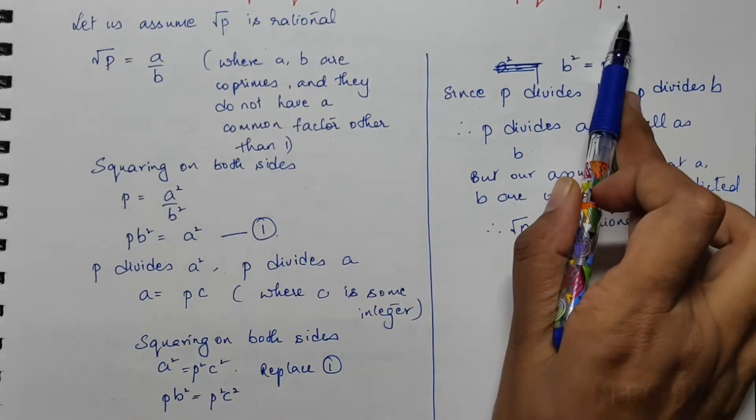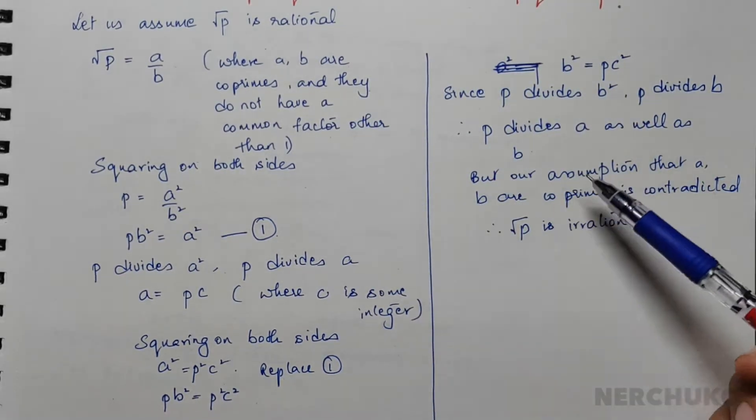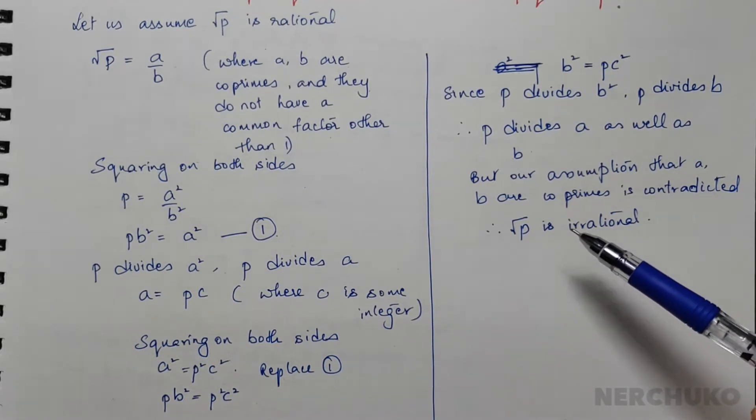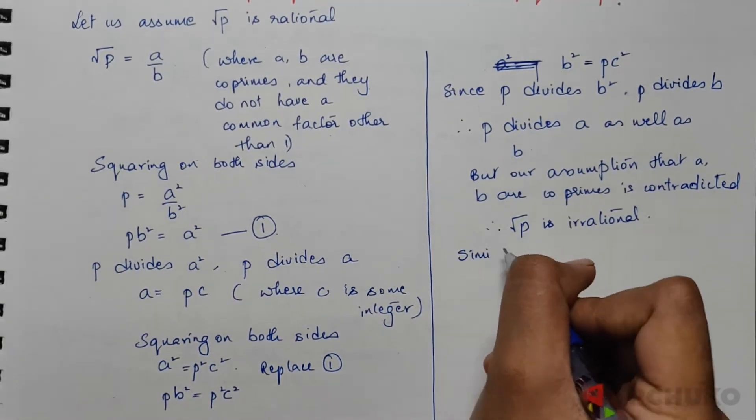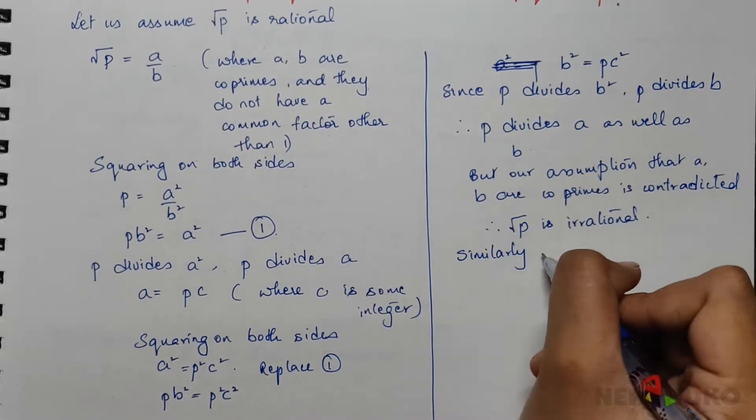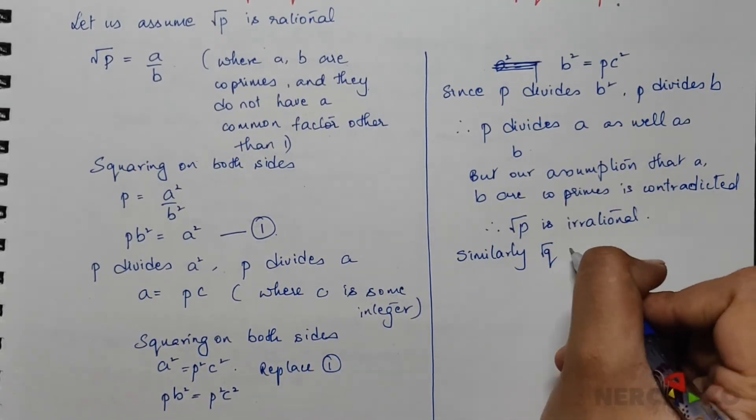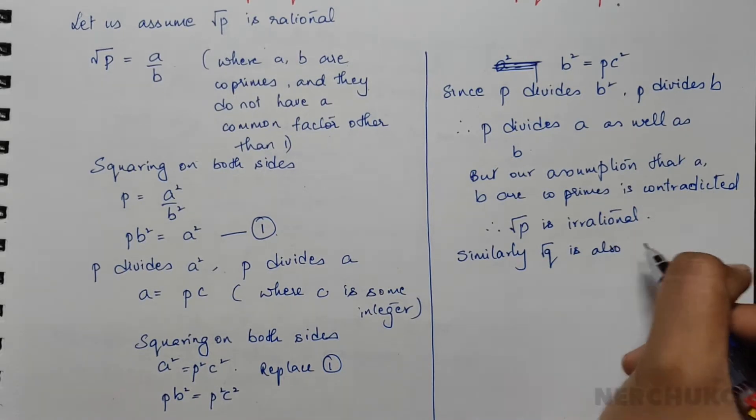Since q is also a prime number, we can prove that root q is an irrational number in the same way. Similarly, root q is also irrational.